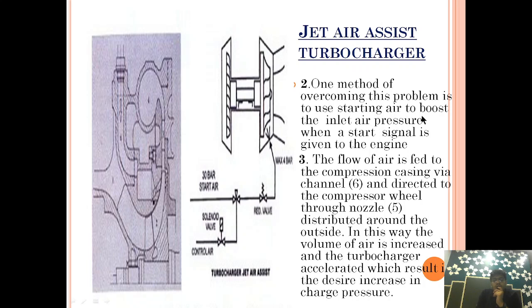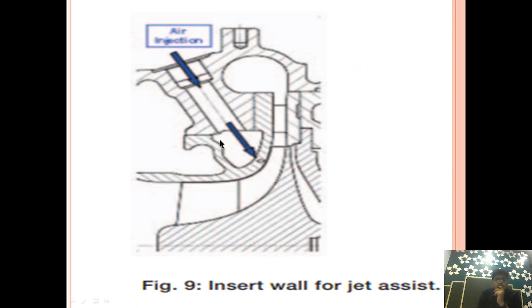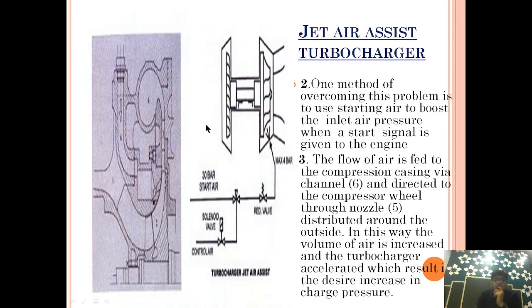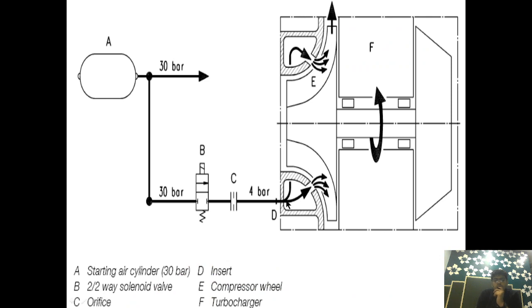The method is to use starting air to boost the inlet air pressure when a start signal is given to the engine. The flow of air is fed to the compression casing via channel 6, and directed to the compressor wheel through nozzle 5.